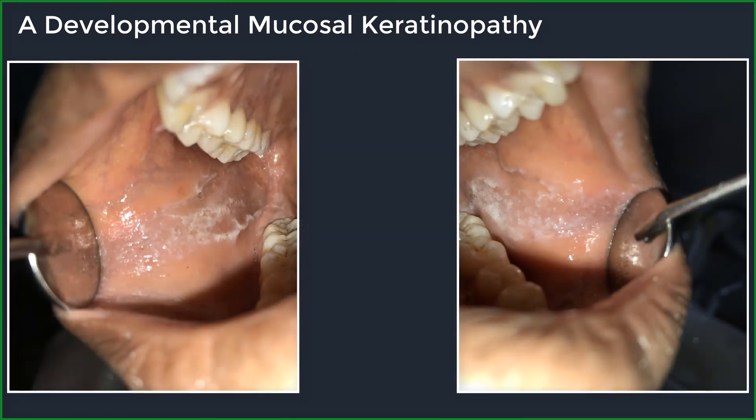The buccal mucosa is the most commonly affected intraoral site. This is followed by other non-keratinized areas such as the mucosa of the lips, floor of mouth, ventral tongue surfaces, and the alveolar ridges. It is uncommon on the dorsal tongue, palate, and gingiva, because the disorder predominantly affects non-keratinizing stratified epithelia. Lesions on the alveolar ridges may sometimes be misdiagnosed as benign alveolar ridge keratosis.